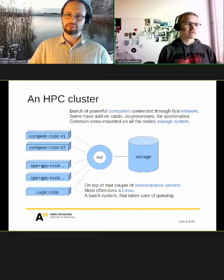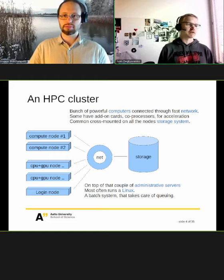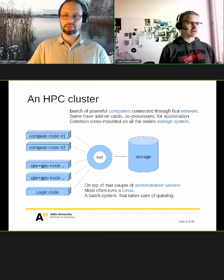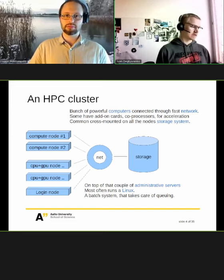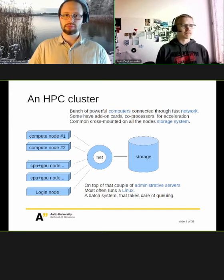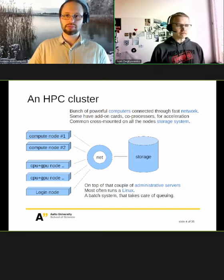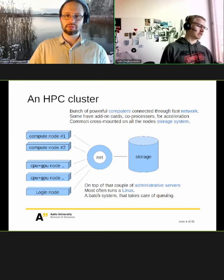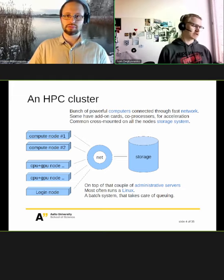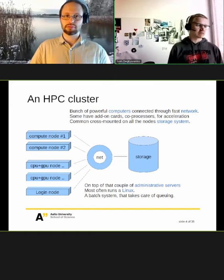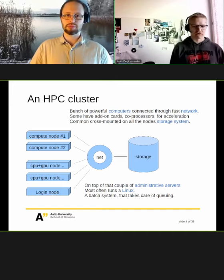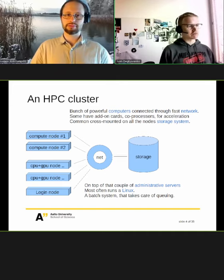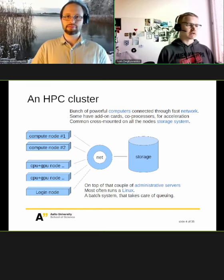An HPC cluster is compute nodes connected to the same network and storage. Compute nodes are nothing more than standard PC architecture — a motherboard with memory, CPUs, and other interfaces like GPUs. The difference is they typically have two or four CPU sockets, providing 24, 40, or even 80 cores, plus accelerators and shared cross-mounted storage.